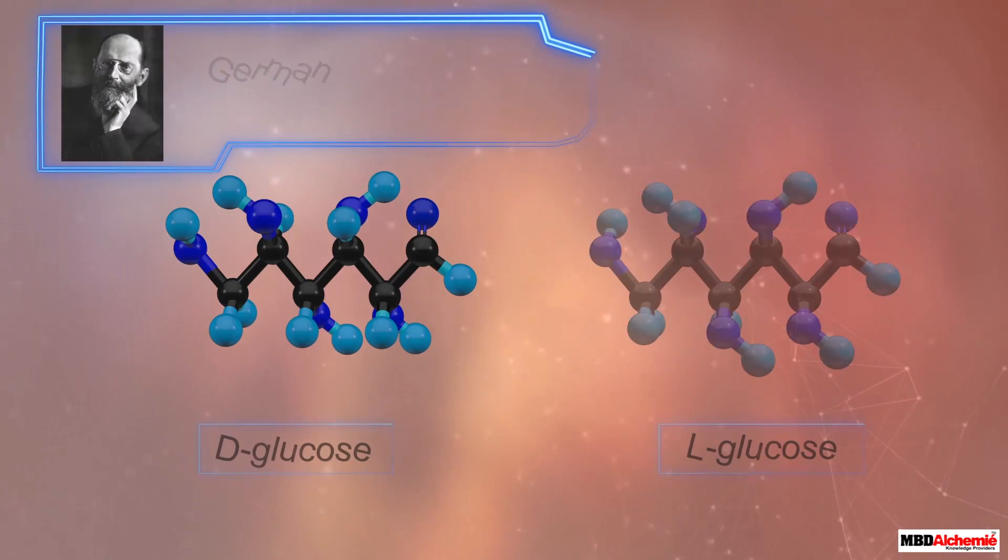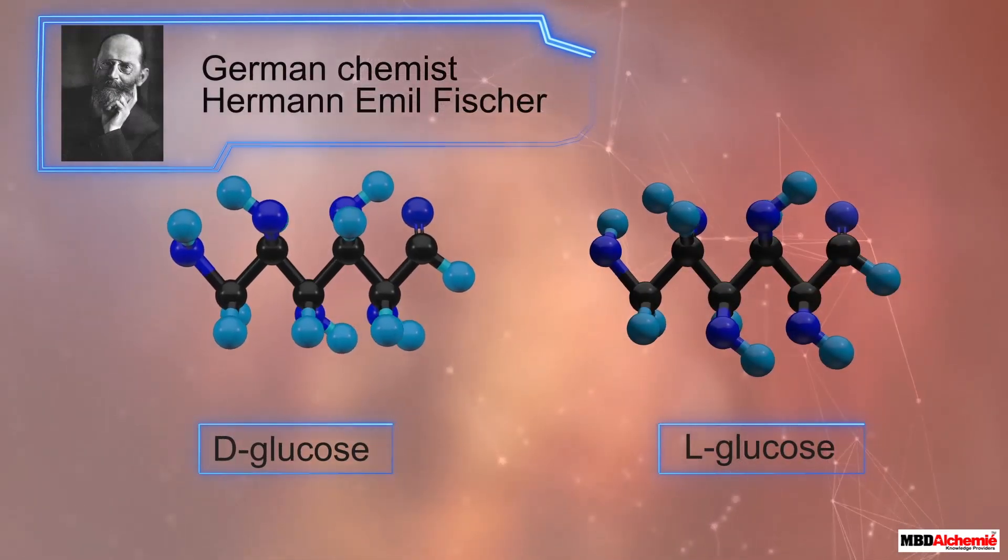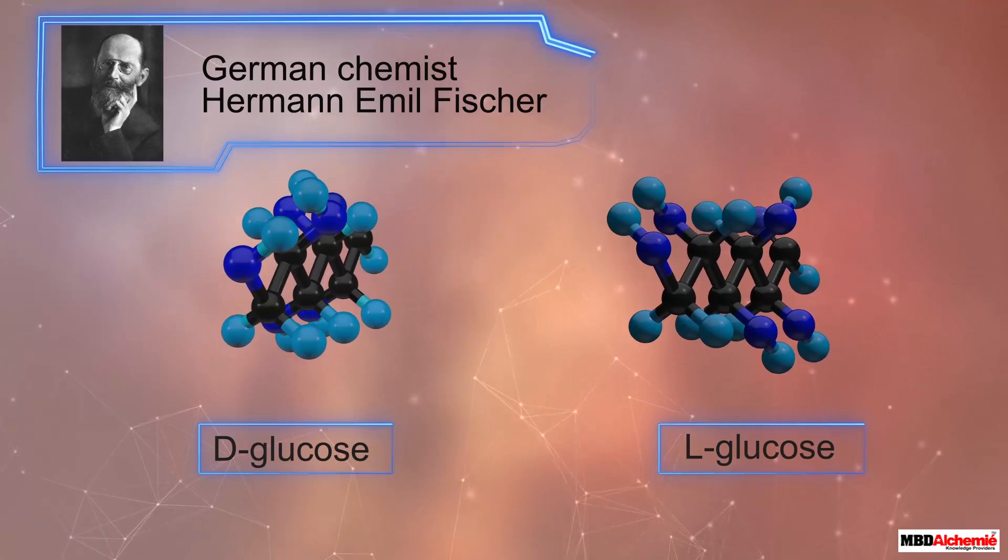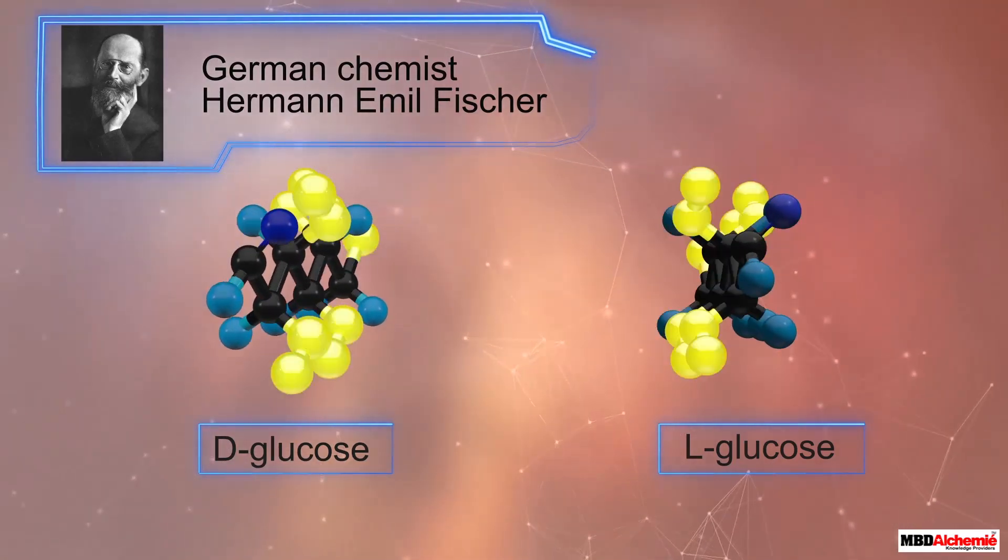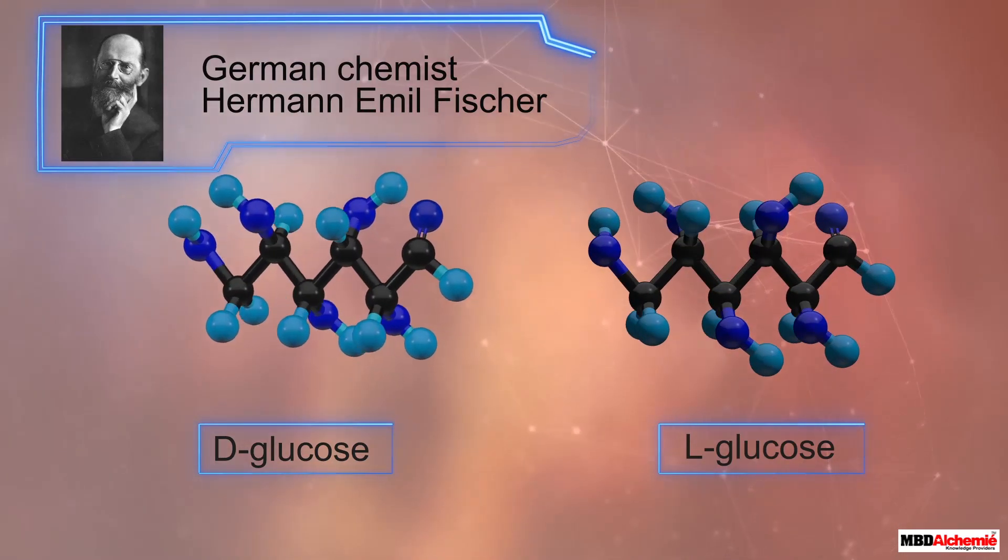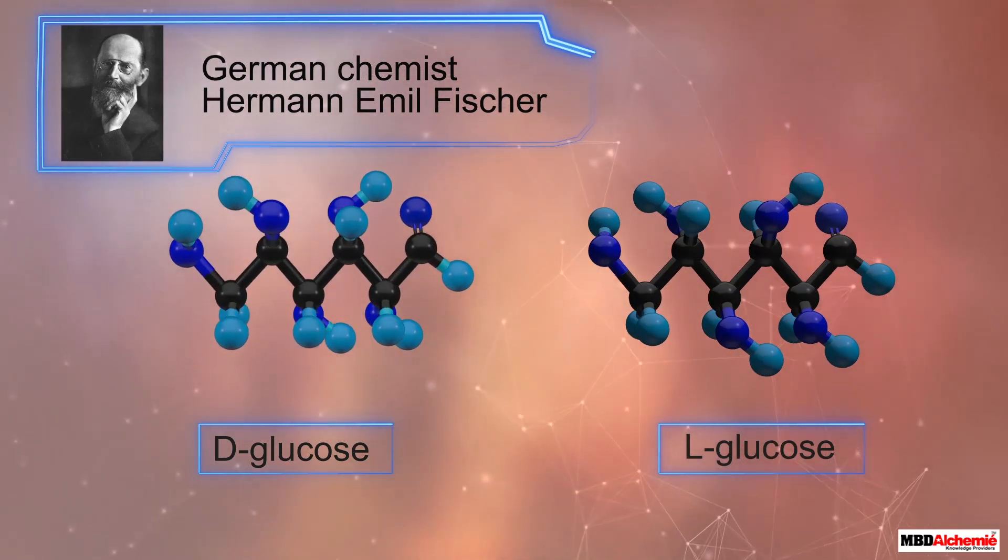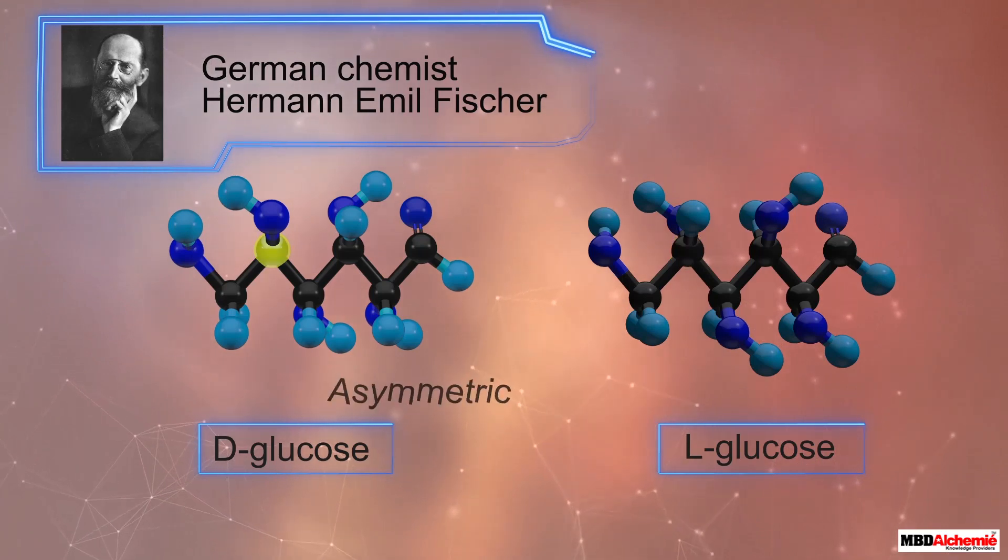Many other properties of glucose were studied by the German chemist Hermann Emil Fischer, who gave the spatial arrangement of the hydroxyl groups of dextrose. Now, in the case of a monosaccharide, the spatial arrangement of the hydroxyl groups around the asymmetric carbon atom farthest from the carbonyl group decides its L or D notation.